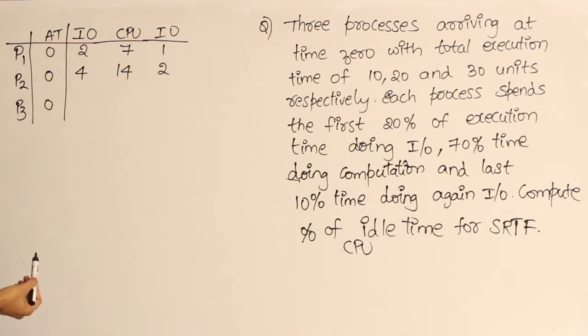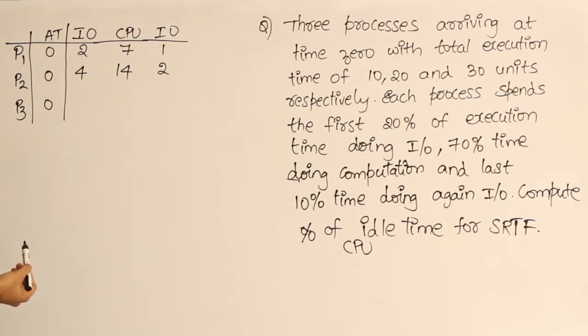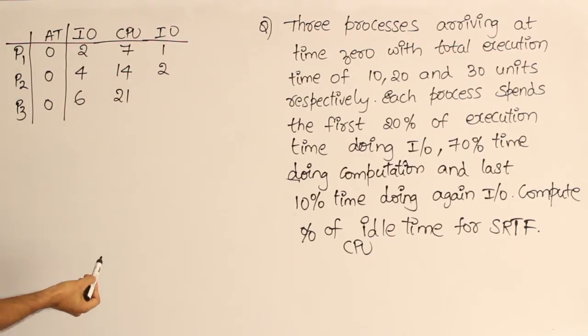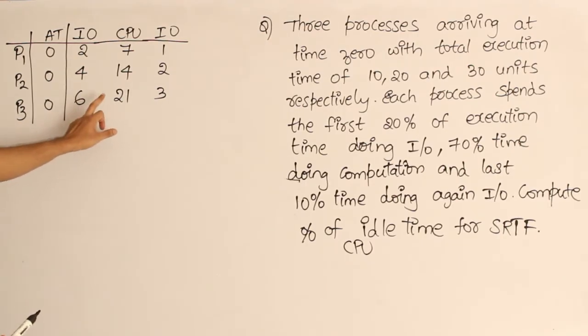The last one is 30 units, split up this way: 20% I/O, which means 6, and 70% CPU, which means 21, and 10% I/O, which means 3. So this is what they have given us. Initially this is I/O, then CPU, then this.